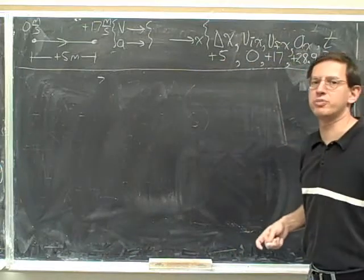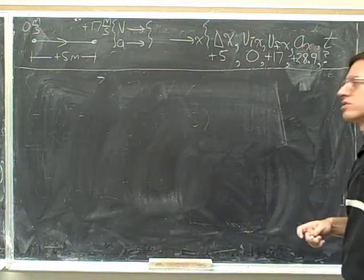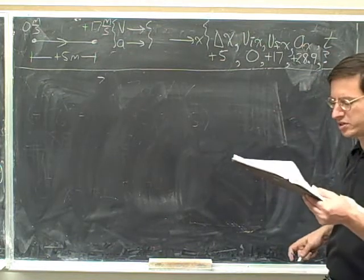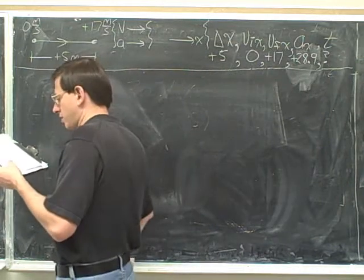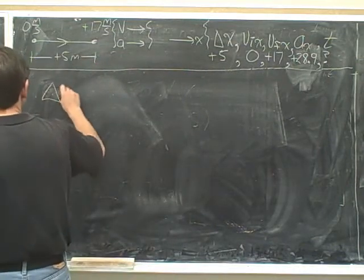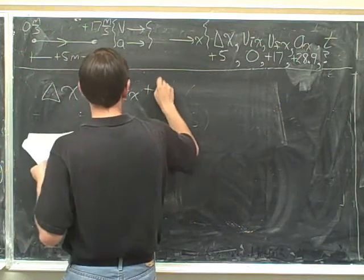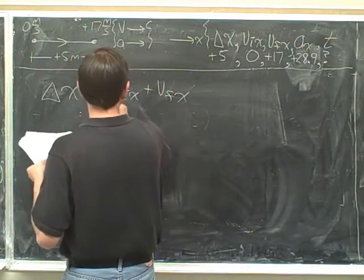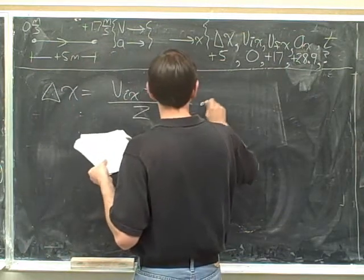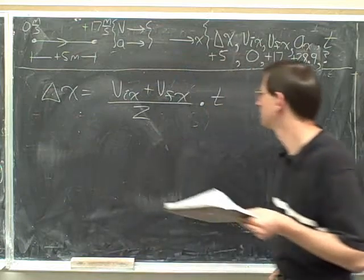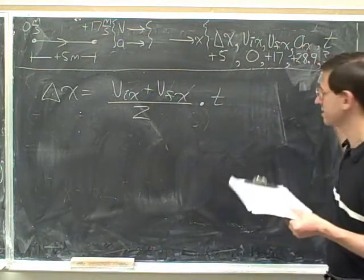Now that we have four different numbers, we can choose almost any of the equations. We just have to choose an equation that has time in it. So choose whichever equation you like. I feel like using this equation: delta x equals v-initial-x plus v-final-x, over 2, times the time. You don't have to use this equation — you could use any equation that has time in it.